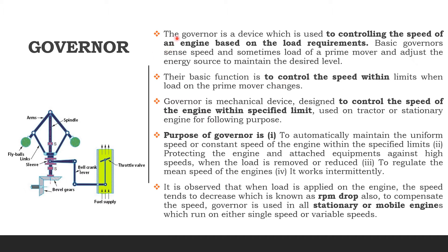Governor is the device which is used to control the speed of an engine based on the load requirement. It is a device that when our engine or tractor works in the field, its speed decreases or increases according to the load. If the tractor is working in the field, as load increases, speed tends to decrease, and as load decreases, speed increases. To avoid this change of speed, the governor system is used.